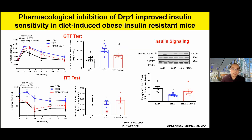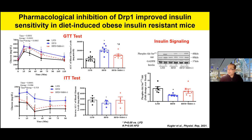For metabolic outcomes, we looked at glucose tolerance tests and insulin tolerance tests, and examined skeletal muscle insulin signaling. Consistent with our hypothesis, high-fat diet clearly induced an insulin-resistant phenotype, but with the Mdivi-1 inhibitor we were able to see alleviation of the impaired glucose response and improvement of insulin signaling in skeletal muscle. We are conducting more studies to further validate these findings and to assess long-term effects — whether these results hold true and whether the inhibitors cause any detrimental effects.